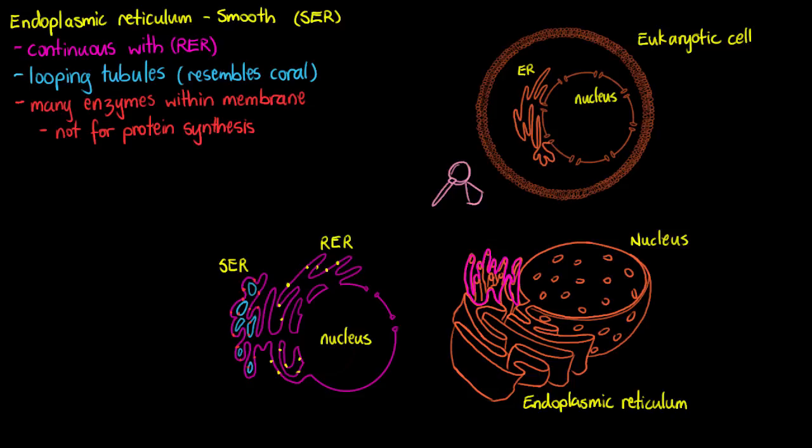You're probably bored of me saying what the smooth endoplasmic reticulum doesn't do because you came here to find out what it does do, right? But have a think about it for a moment. We won't have protein folding or processing. We won't have DNA replication because we know that happens in our nucleus. We won't have translation because we know that requires ribosomes, so what's left?